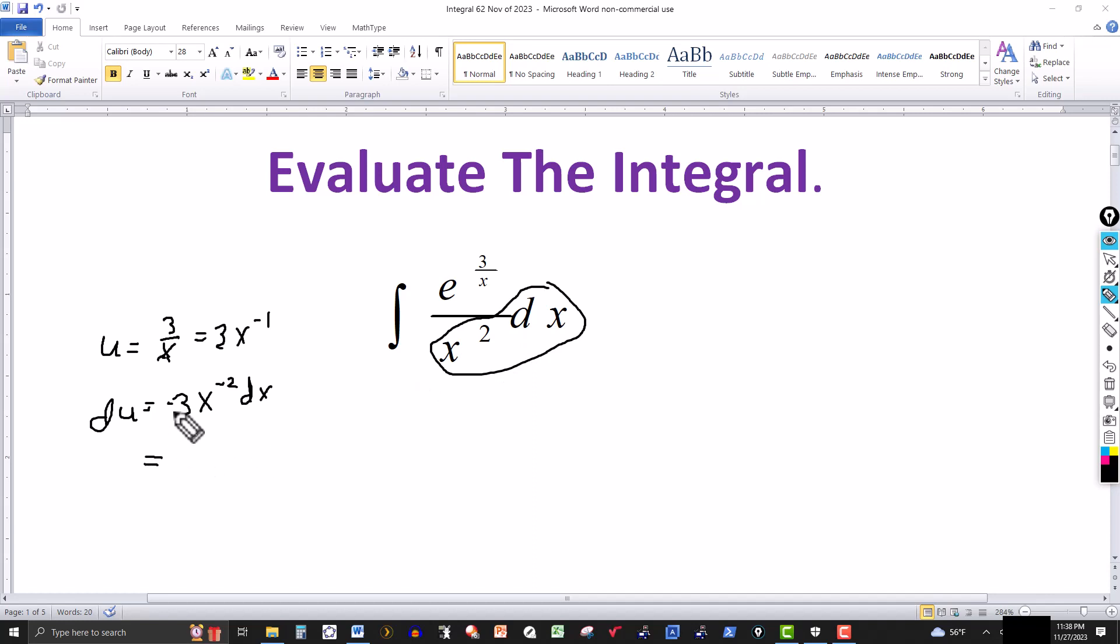So I'm going to divide through by a negative 3, I have a negative here, and this will be du over 3, and this gives me just x to the negative 2.